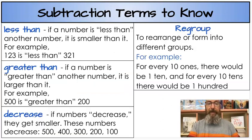Now here comes a biggie page, a lot of terms here. The first one I want to look at is less than. If a number is less than another number it's smaller than it. For example 123 is less than 321.